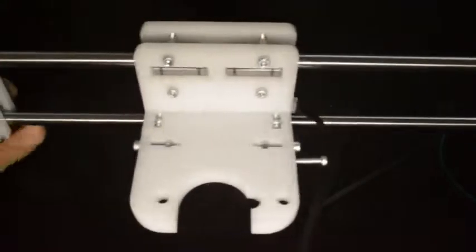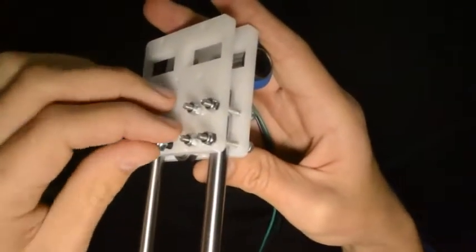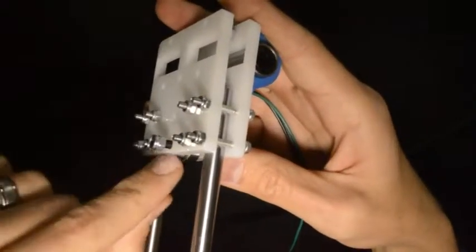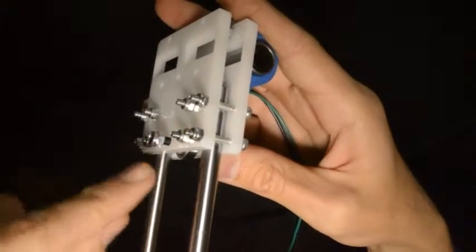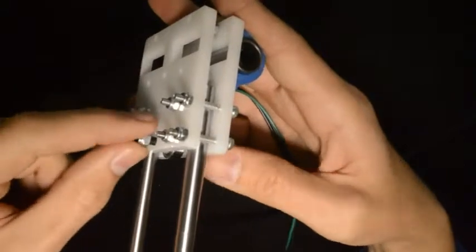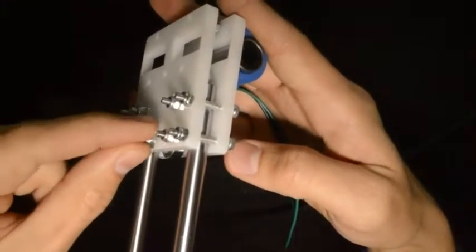And the X-carriage should be able to move freely on the linear rails. Finally, we can tighten the M4 screw that holds the bearing. The purpose of this is not to clamp it down, but you can just tighten it so that the screw cannot rattle anymore.